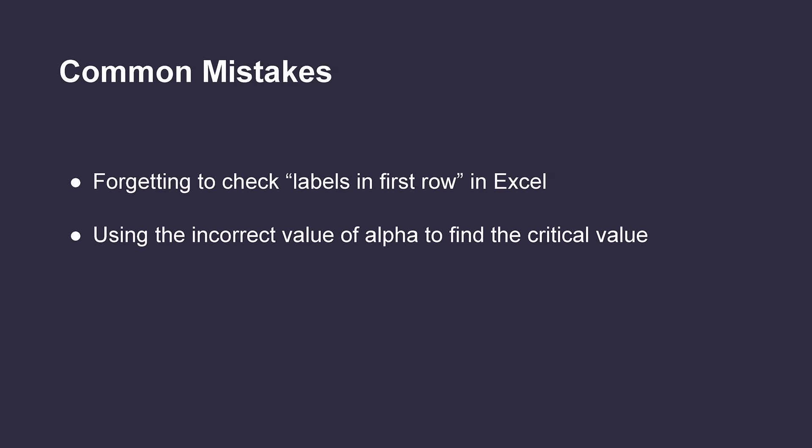Next, we must ensure that we are using the F-table with the correct alpha level. Most critical value tables in statistics, such as t-tables and z-tables, are only one table and do not have separate tables for each alpha level, so it can be difficult to remember to use the table with the correct alpha level.